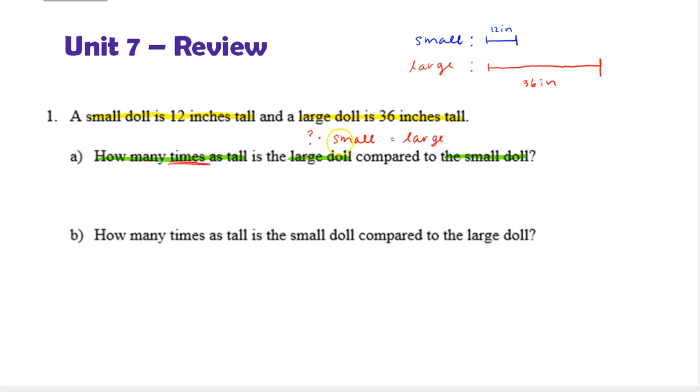Now remember, this is equivalent through fact families. If this number is missing, we could divide the large by the small, and use division to find this exact amount. So we're going to find the large height divided by the small height, which would be 36 inches over 12 inches. Notice our inches cancel, and we're just left with 36 divided by 12, which is 3. So, the large doll is 3 times as tall as the small doll.